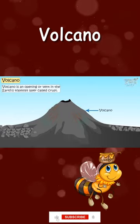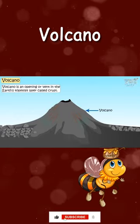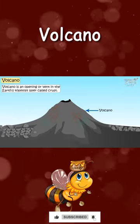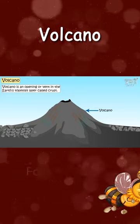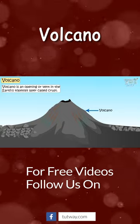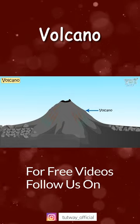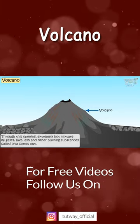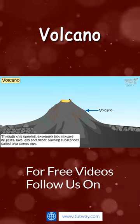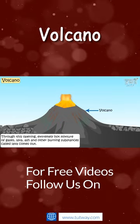A volcano is an opening or vent in the earth's topmost layer called the crust. Through this opening, an extremely hot mixture of gases, lava, ash, and other burning substances comes out.